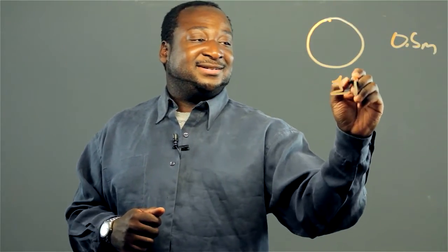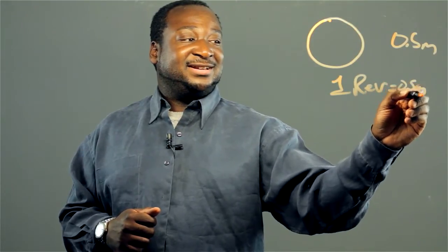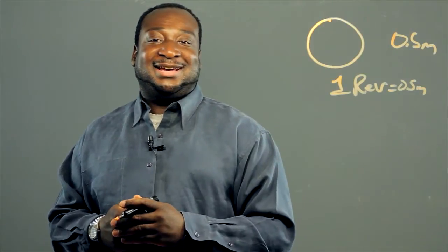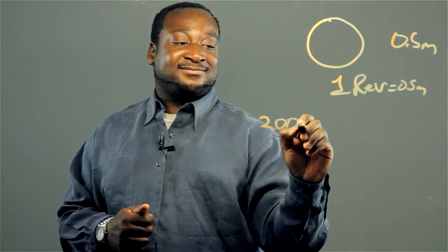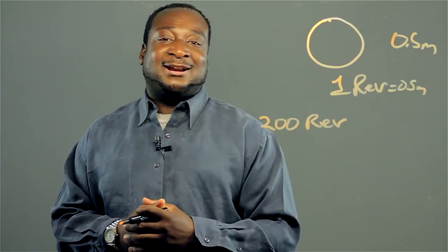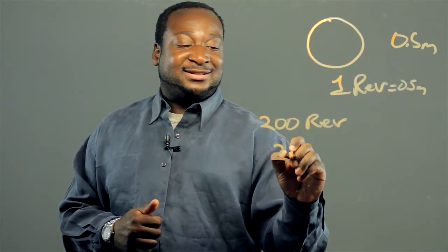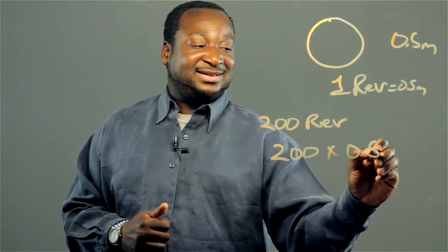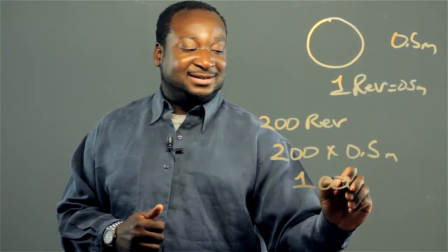So we know one revolution equals 0.5 meters. If we went on a trip and there were 200 revolutions, to find out how many meters we traveled, we just multiply. 200 times 0.5 and that equals 100 meters.